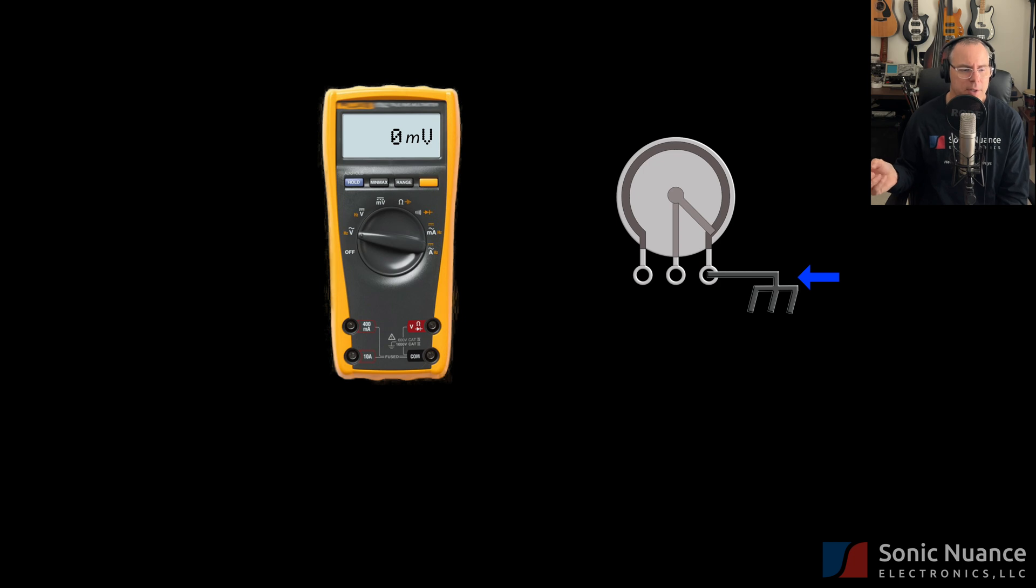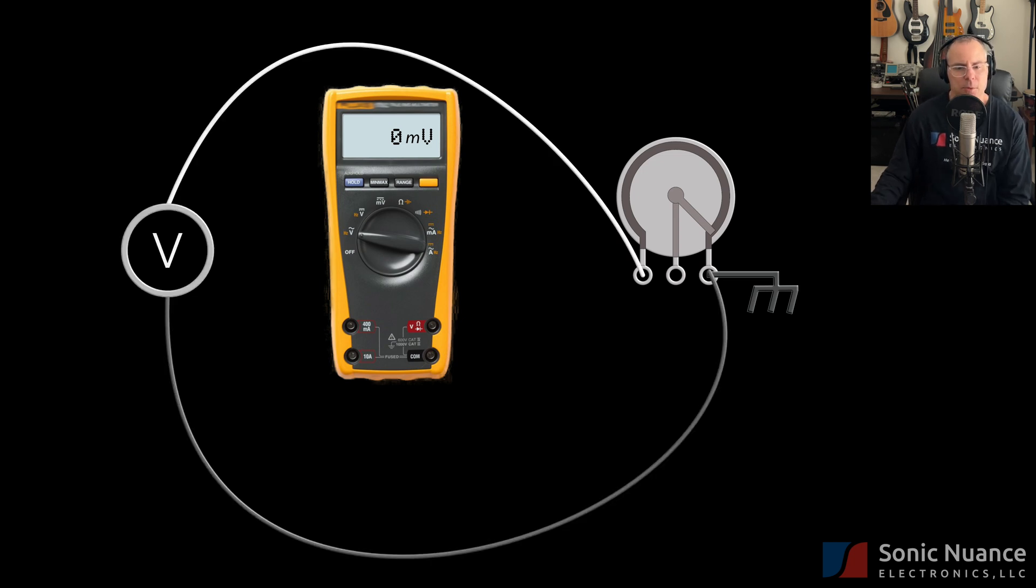which in electronics terms is your reference point. So any voltage above ground is considered a positive voltage, and any voltage below ground is considered a negative voltage. Ground is simply a reference point. Don't get too bogged down by what it means, but it is an important point of reference.